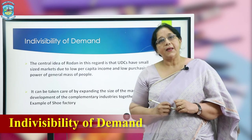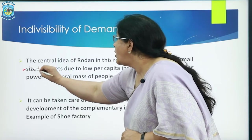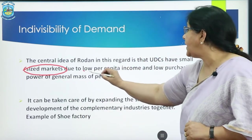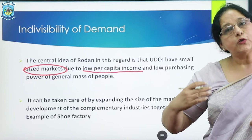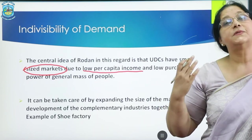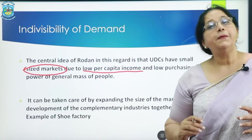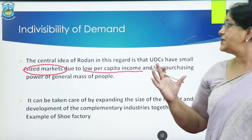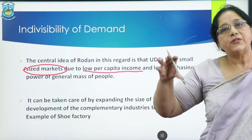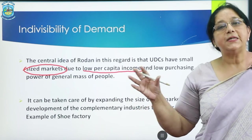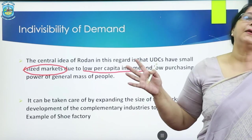As stated in the beginning, the most important drawback of a developing economy is the small size of the market, which exists because of low per capita income. Because of the low level of development, incomes are low, demand is less, and the size of the market is very small. It is very important that the size of the market be expanded. This is known as indivisibility of demand. A number of industries need to be set up simultaneously so that they can complement each other and be a source of demand for each other, thereby widening the size of the market.